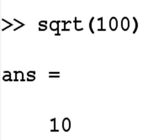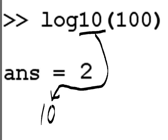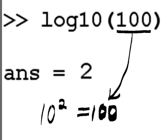Square root of 100, answer equals 10. Log 10 of 100, answer equals 2. What does that mean? That means that 10 to the second power equals 100.